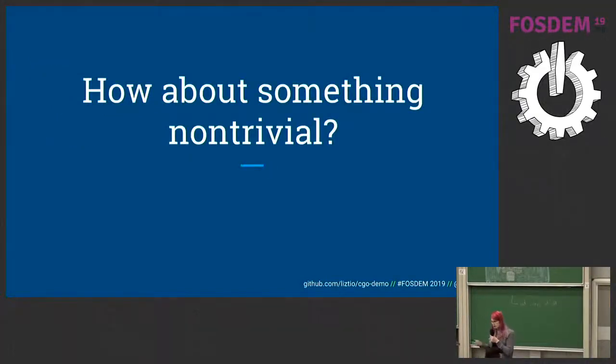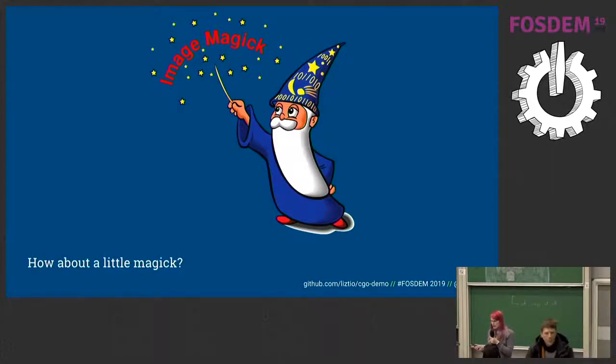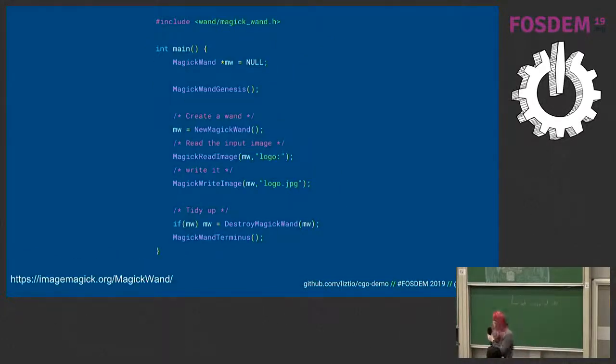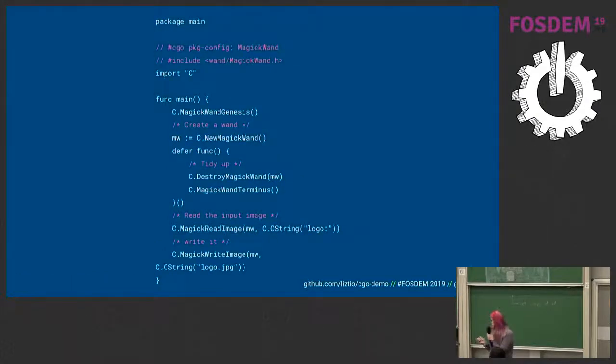Now, this has all been kind of trivial. How about something a little bit more interesting? How about a little magic? Who likes using ImageMagick? It's everybody's favorite library to use, right? This is an example, very simple C ImageMagick program. It takes in that wizard friend, which is defined as logo colon, and it outputs it to logo.jpg, and that's all it does, and just doing that takes like 15 lines of C. So, how do we do this here? Well, it's actually not too bad to translate this. You put C dot in front of all of the functions before.